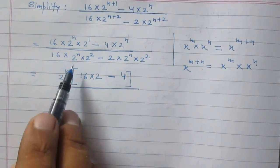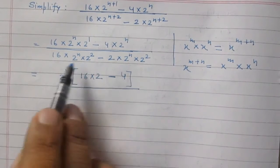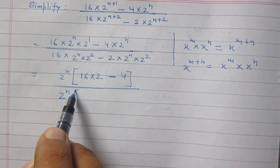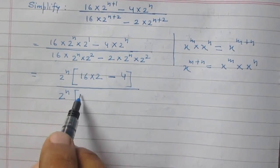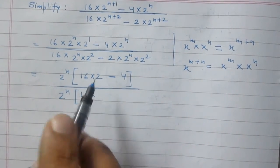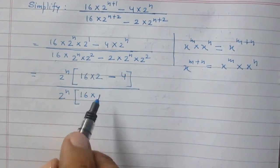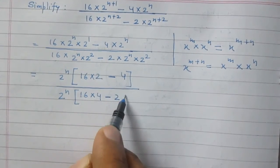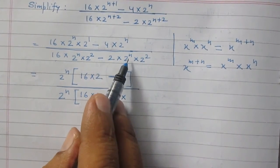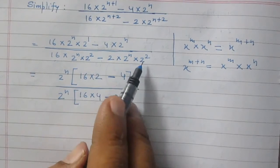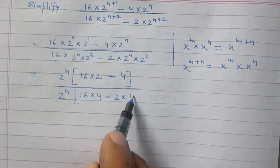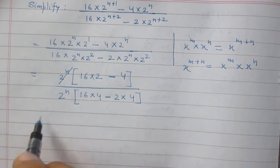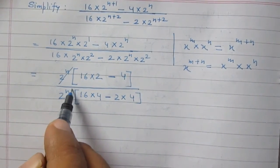In the denominator, 2 raised to the power n is also a common term, so we take it outside the bracket. Inside the bracket we have 16 multiplied by 2 raised to the power 2, which is 4, then minus 2 multiplied by 2 raised to the power 2, which is 4. The 2 raised to the power n in the numerator and denominator are cancelled.